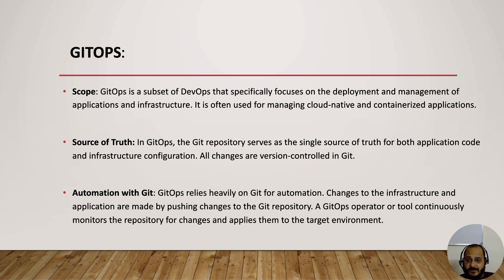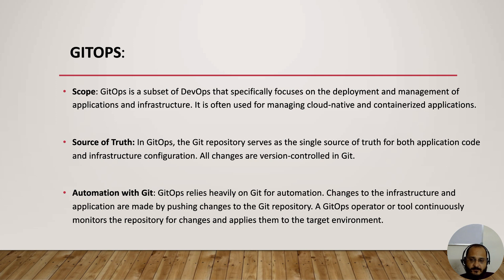In GitOps, the Git repository serves as a single source of truth for both application code and infrastructure configuration, and all changes are version-controlled in Git. Your application source code, your infrastructure code, and everything else required to build your application lives in the Git repo itself — all configuration is kept in Git.